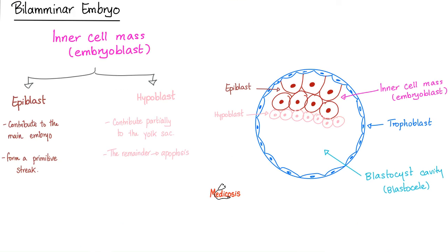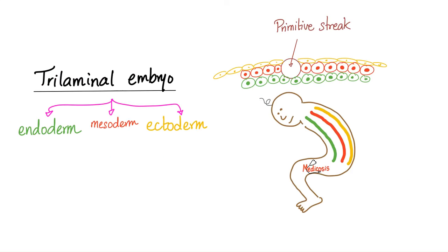The bilaminar embryo has epiblast and hypoblast. Which one will be the actual embryo? The epiblast. It will give you the embryo itself and a primitive streak. What is the function of the primitive streak? It induces the differentiation of the embryo into three layers: endoderm, mesoderm, ectoderm. Endo means on the inside, ecto means on the outside, and meso means in the middle — that's why we refer to the midbrain as 'meso.' But don't get it twisted: mesoderm is not part of the brain; the midbrain is part of the ectoderm.